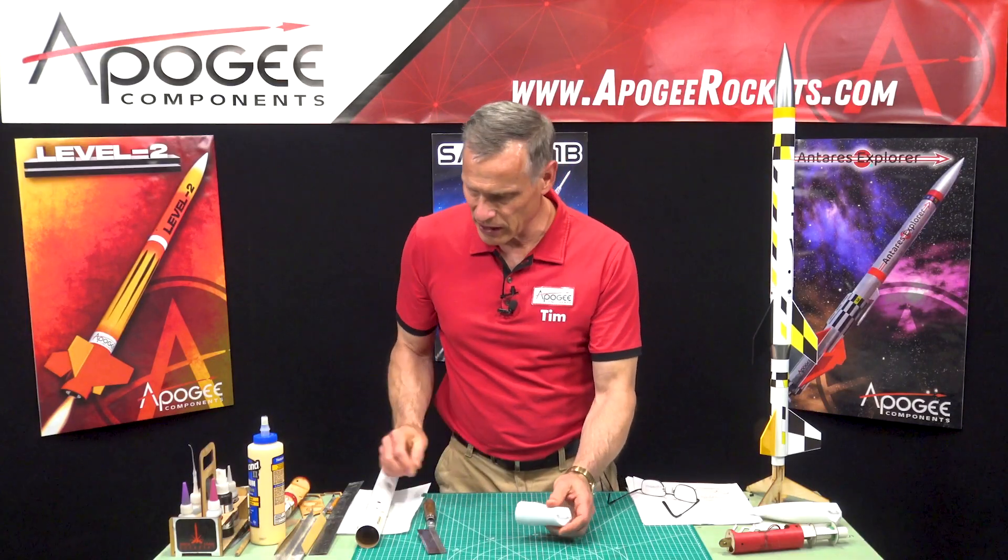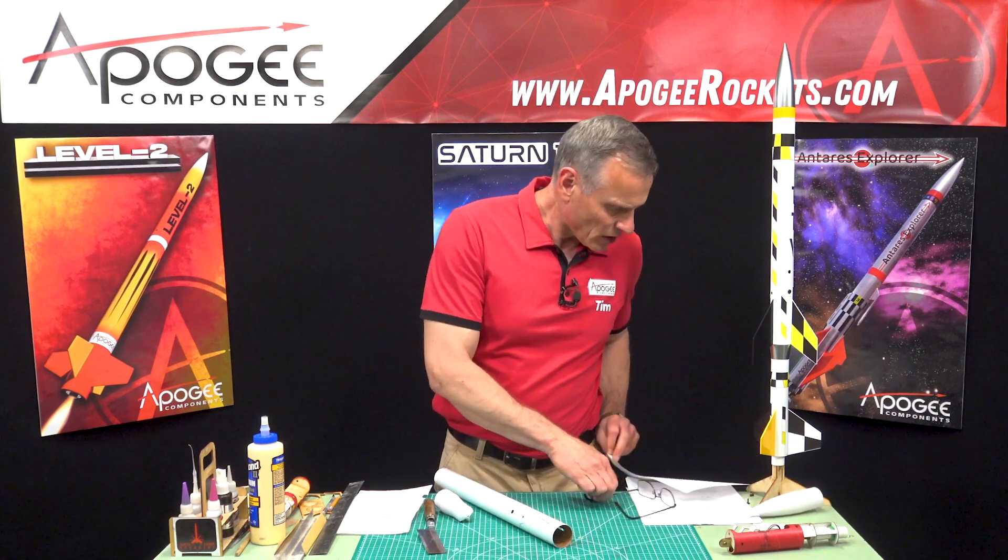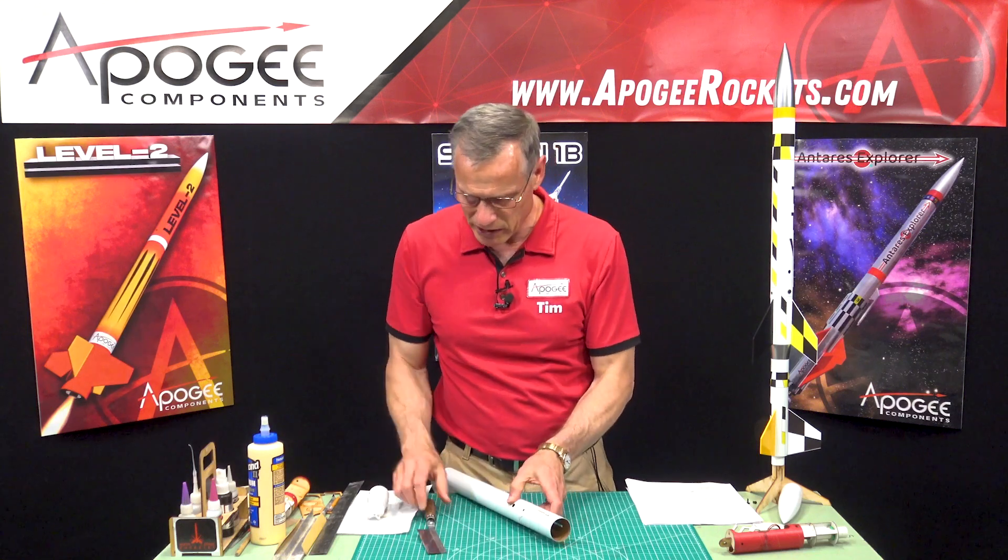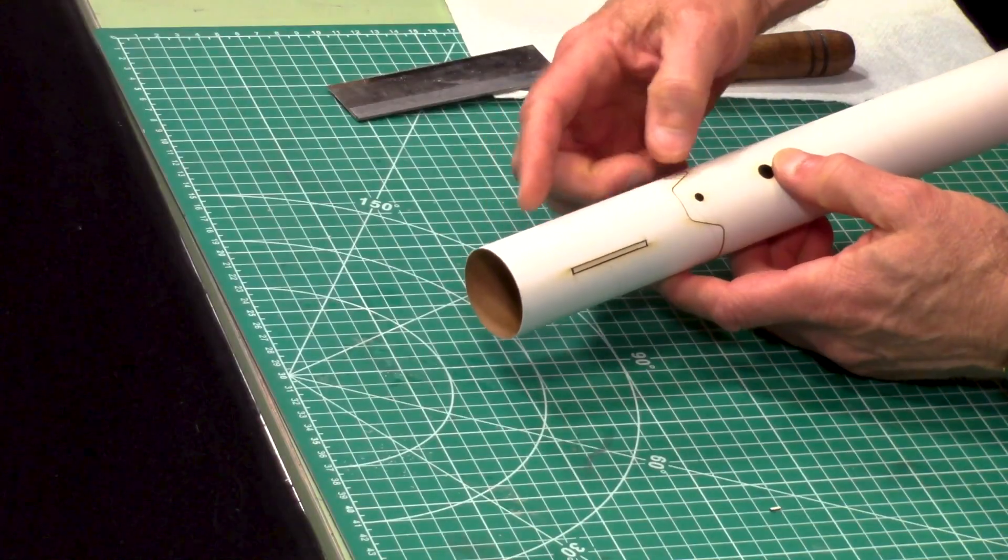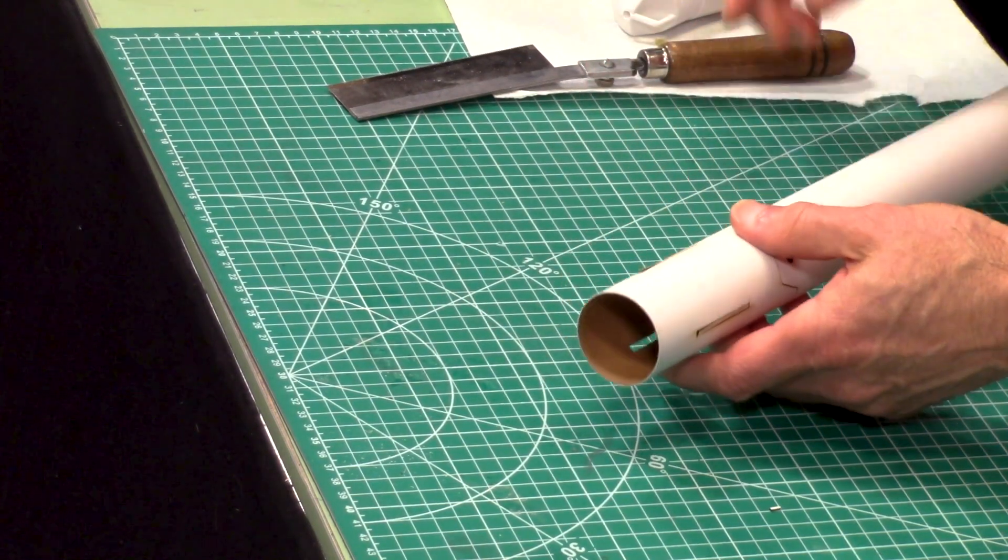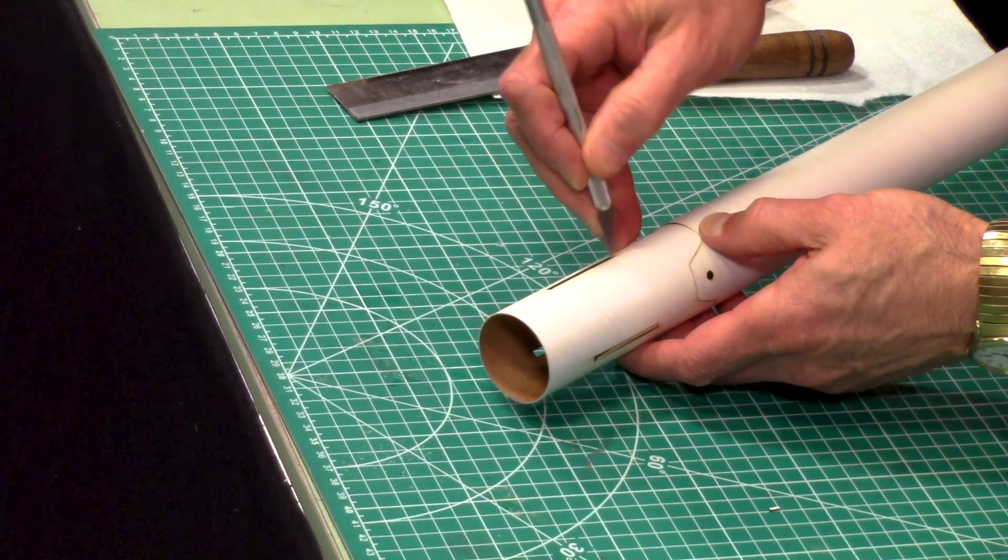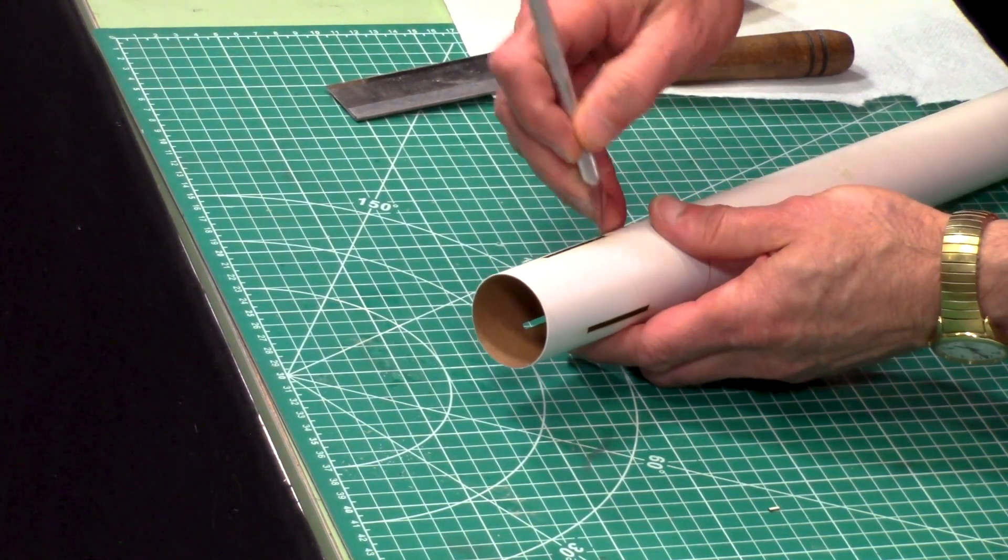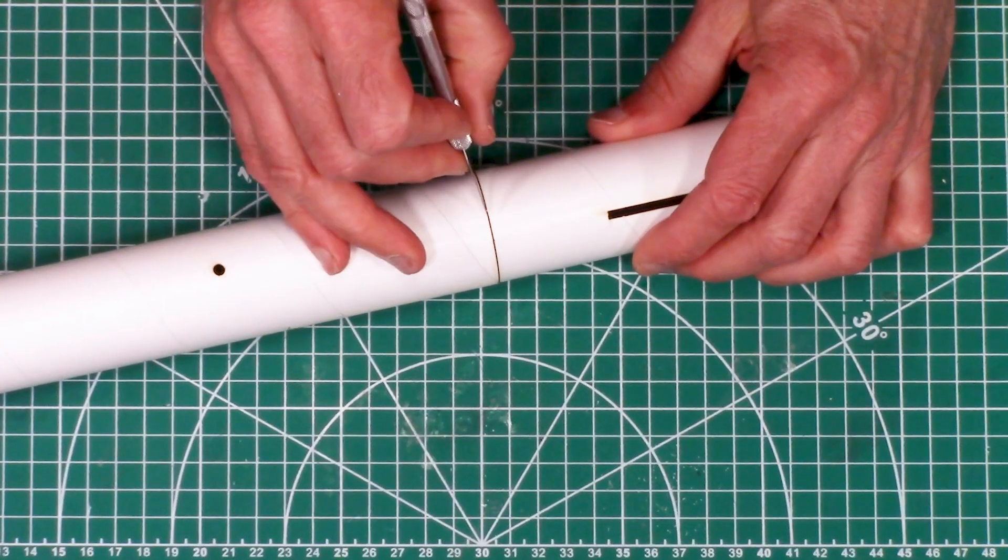Then we're going to take our body tube and separate it. This is going to be the bottom part of the upper stage. We'll also take out the fin slots and cut this tube apart.